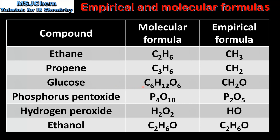Glucose has the molecular formula C6H12O6 and its empirical formula is CH2O. Next we have phosphorus pentoxide. Its molecular formula is P4O10 and its empirical formula is P2O5. Hydrogen peroxide has the molecular formula H2O2 and the empirical formula is HO.